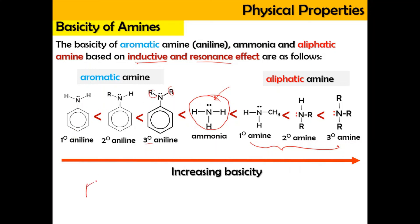We can also consider a case where amine is attached with a chlorine group. Chlorine acts as an electron-withdrawing group (EWG), pulling electron density toward itself. Combined with the lone pair of nitrogen being delocalized into the benzene ring, the electron density on nitrogen is further reduced, making it even less basic than normal aniline when an electron-withdrawing group is attached.